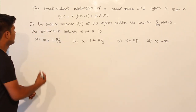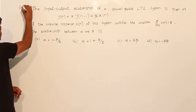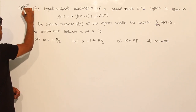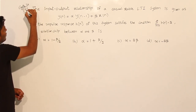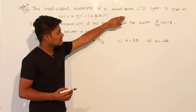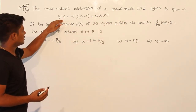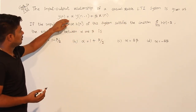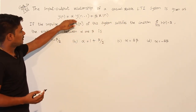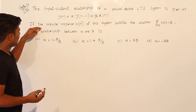Let us see this question. This question is given in GATE 2014 in the subject signals and systems. The input-output relationship of a causal LTI system is given as y(n) = α·y(n-1) + β·x(n-1).